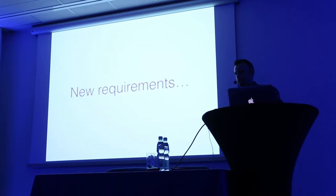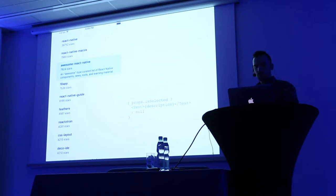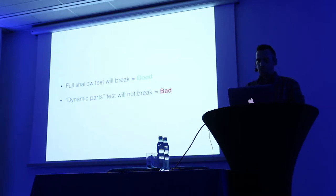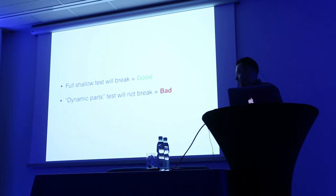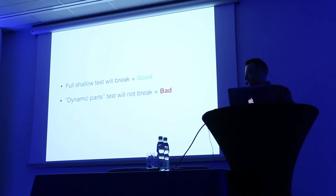Now there are new requirements in our app. The project manager comes and asks: when I click this item, apart from the green color, I would like it to expand and show a description. So we go to our code and add this - if it's selected, show me the description. What is going to happen with the tests we wrote previously? The full shallow test is going to break - and this is good. If we change the UI, it should break. But the dynamic part test is not going to break - and this is bad. We can commit this code, we can push it. Imagine on Facebook if they commit the code, it will pass your CircleCI, Travis, wherever you use. It's going to be green, and then you will see on your mobile something that's not expected.